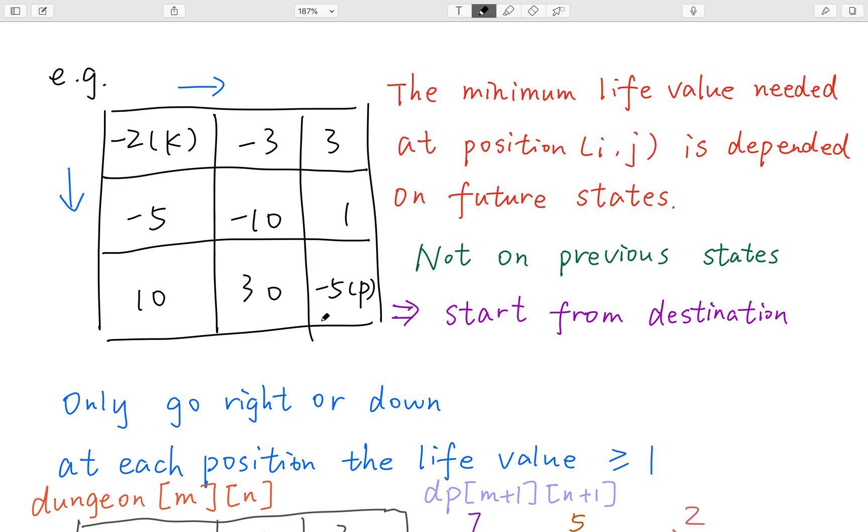So we can use that to calculate its previous states. We know that the minimum health point at each cell is not depended by its previous states. It's depended by the future states because we already know the final state. So we should think in a reverse way. And we can also treat this problem as a dynamic programming problem.